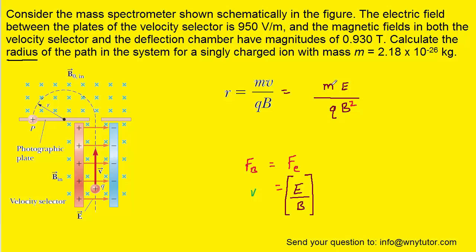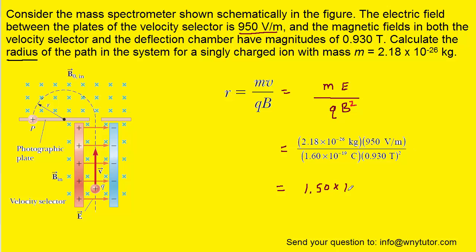We have the mass, the charge, the magnetic field as stated earlier. E is the electric field strength, and that was stated as well as being 950 volts per meter. So, here we have all the known values plugged in, and when we compute that, we should get approximately 1.50 times 10 to the minus 4 meters.